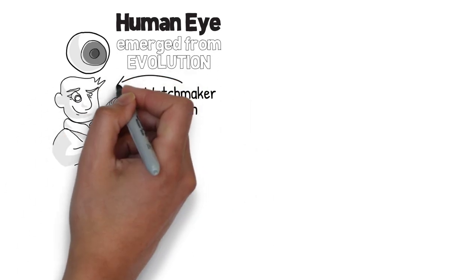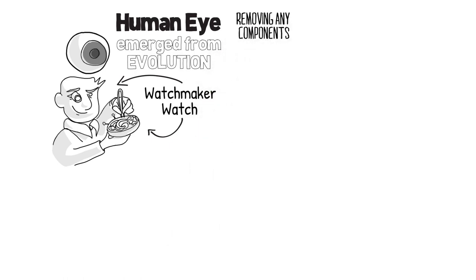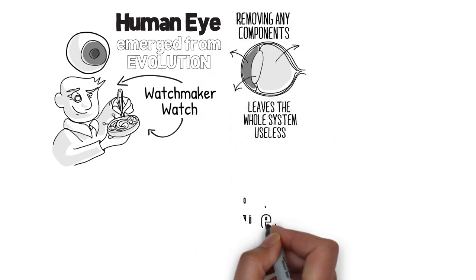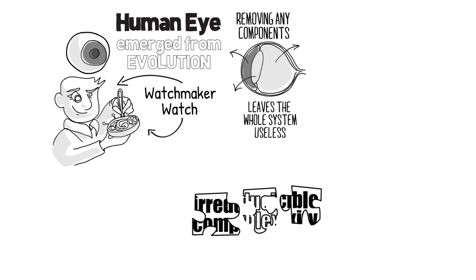The thrust of their argument is that removing any of the different components that make the eye work would leave the whole system useless. This criticism is called irreducible complexity.